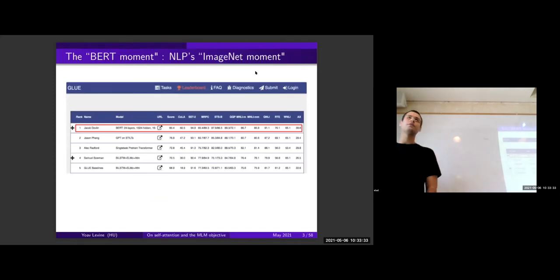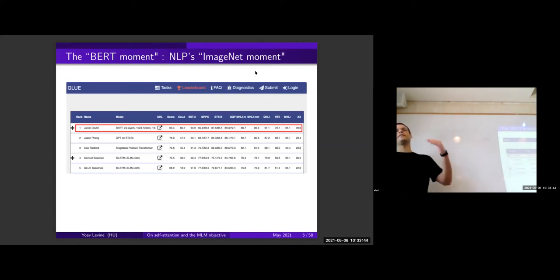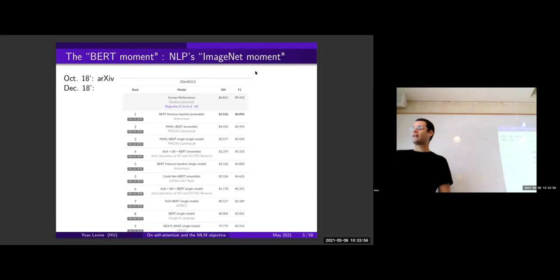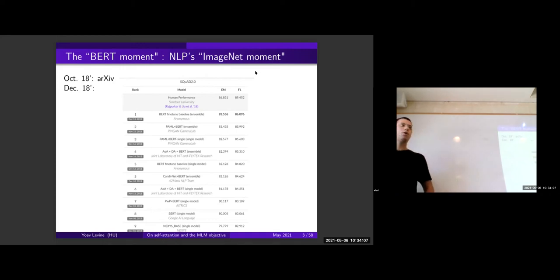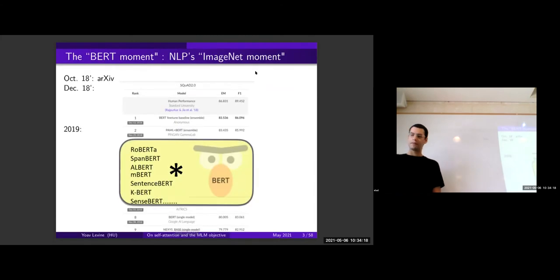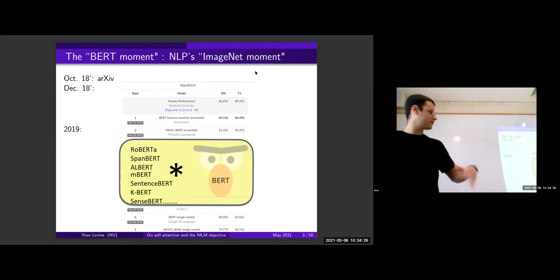As a setup for this whole talk — most of you probably know that NLP has experienced its ImageNet moment: the moment where a paper comes out and the distance between the current state of the art and human performance is shortened dramatically. That's what BERT did. We call it the BERT moment in NLP. It came out in October 2018, and just two months later you had to go all the way down to ninth place on a prominent question answering leaderboard to find a non-BERT-based architecture. Hundreds and thousands of follow-ups and BERT variants followed — multilingual BERT, sentence BERT, and so on.